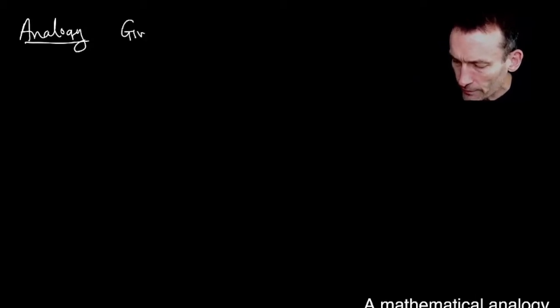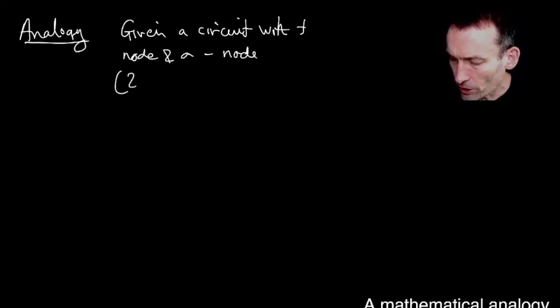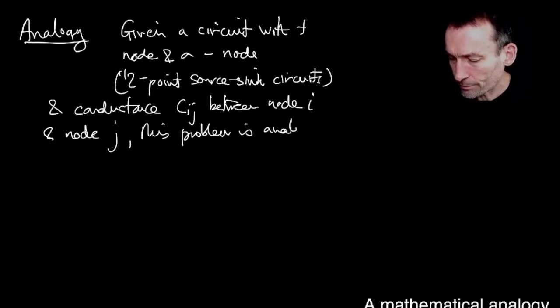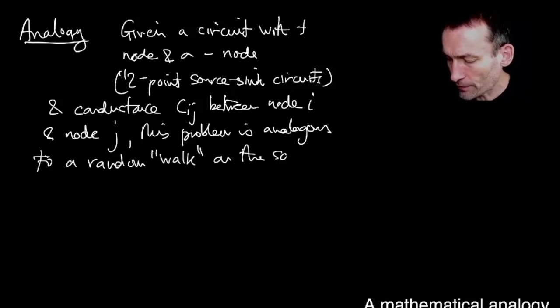So the analogy is as follows. If I've got a circuit, so given a circuit with a plus node and a minus node, remember these were the two-point source sink circuits that I introduced a while ago, and conductance Cij between node i and j. This problem is analogous to a random walk, we'll call it random walk, on the same graph.